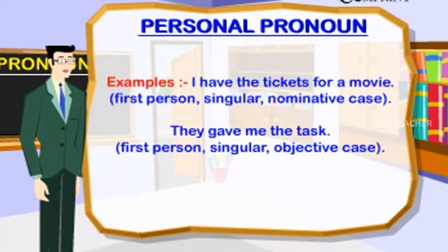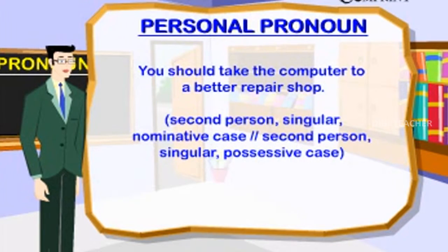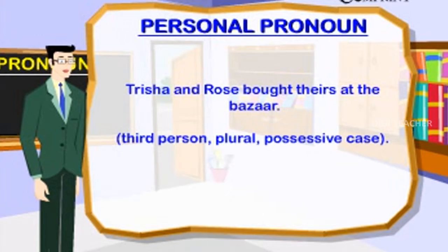Examples: 'I have the tickets for a movie' — first person, singular, nominative case. 'They gave me the task' — first person, singular, objective case. 'The pleasure is mine' — first person, singular, possessive case. 'You should take the computer to a better repair shop' — second person, singular, nominative case. 'He will meet her at noon' — third person, singular, nominative and objective case. 'Trisha and Rose bought theirs at the bazaar' — third person, plural, possessive case.